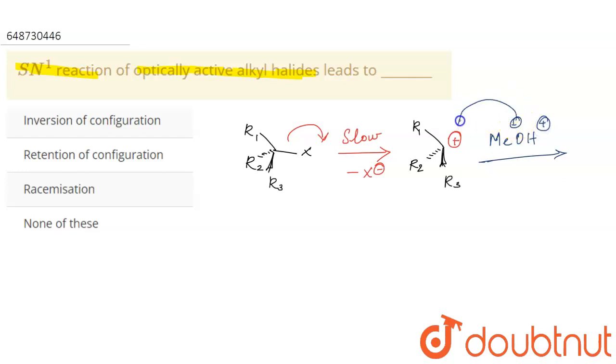Now this attack will take place in two ways. So for understanding purposes, I am just writing this carbocation like this. Fine: R1, R2, R3.